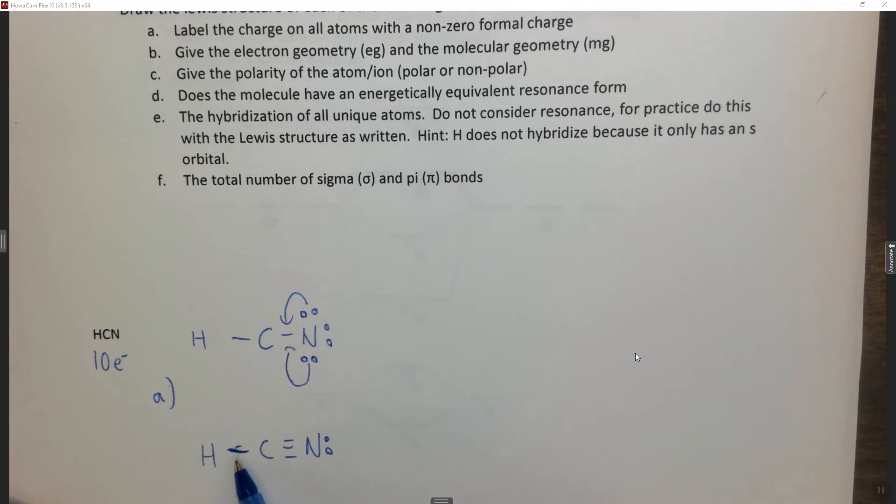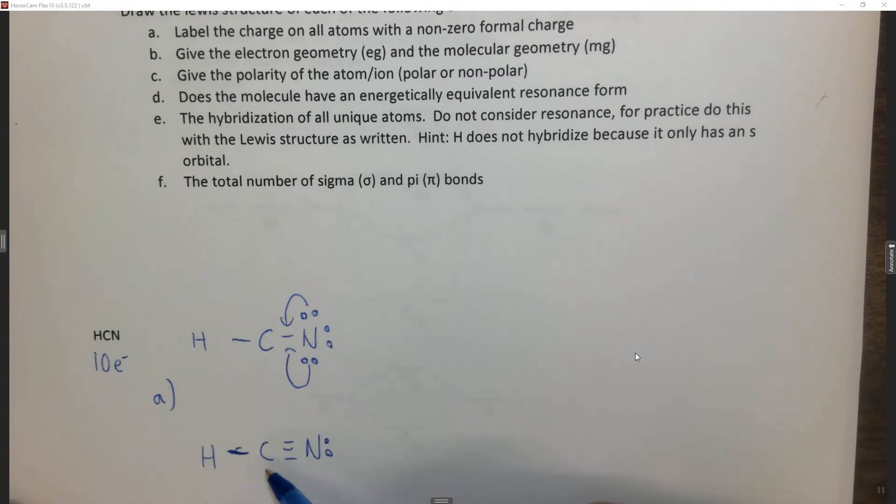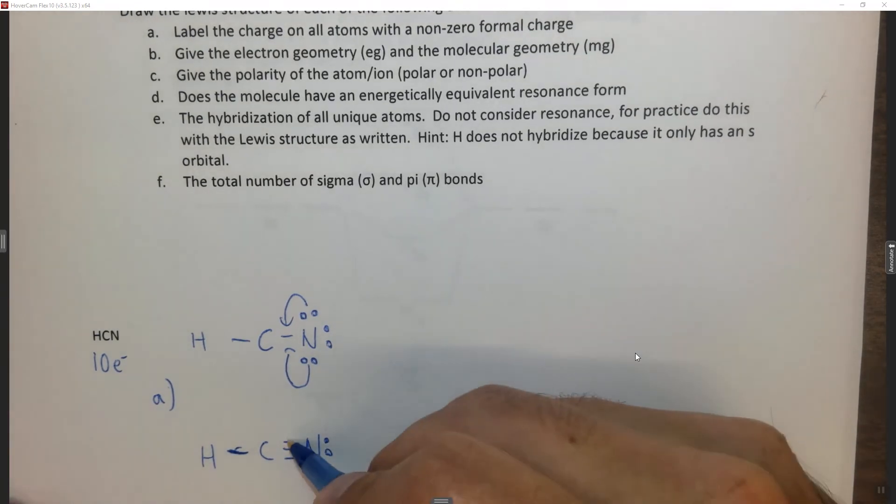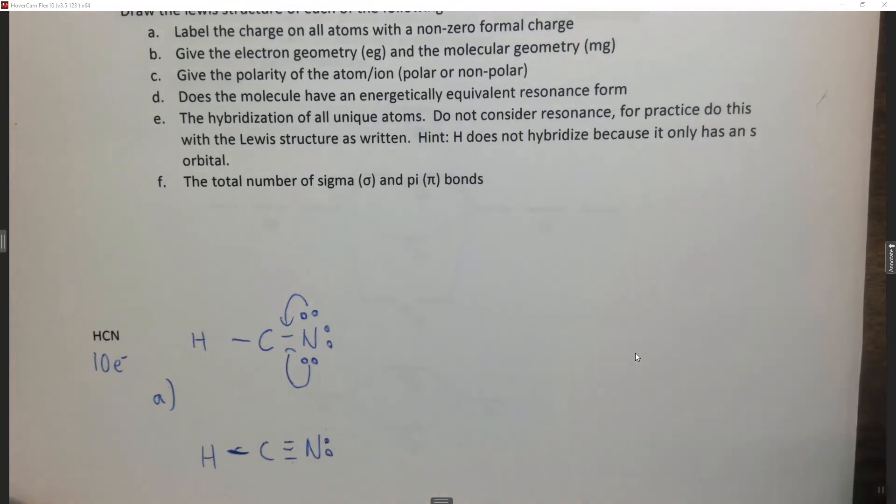Count the dots is 1, count the dashes is 1. It has 1, 2, 3, 4 electrons around it. So it's neutral. Nitrogen is in 5a, so it wants 5 electrons around it. 1, 2, 3, 4, 5. So it's neutral. So both of these are neutral and this is the best Lewis structure of HCN.